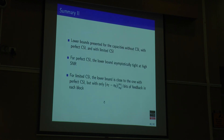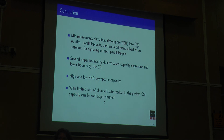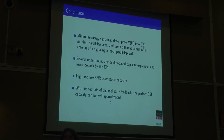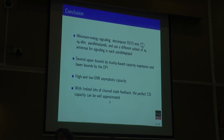In conclusion, the main contribution is the minimum-energy signaling result, which decomposes R(H) into NT-choose-NR parallelepipeds. For each parallelepiped, you only need NR transmit antennas to signal, making it equivalent to signaling over an invertible, full-rank MIMO channel. Thank you very much for your attention.